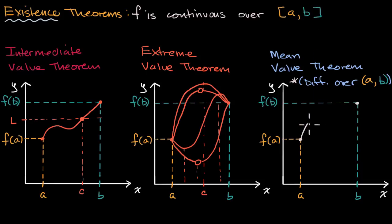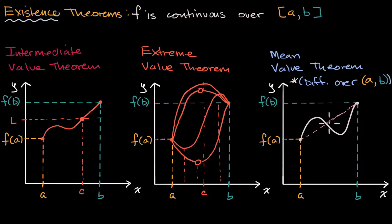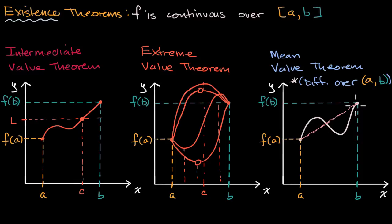So let me draw that — a function that is differentiable over the open interval and continuous over the closed interval. If I were to compute the average rate of change from (a, f(a)) to (b, f(b)) — so the average rate of change, shown in pink — that would be the slope of this line right over here. The mean value theorem tells us that there exists a point c where the derivative of our function at that point, the slope of the tangent line, is the same as the average rate of change.